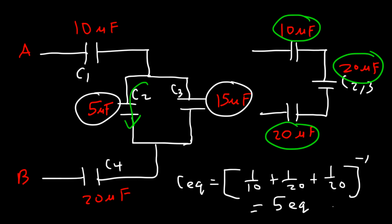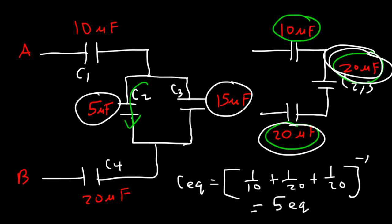To do it mentally: the two 20 μF capacitors in series give half of 20, which is 10. That 10 is in series with the other 10, and half of 10 is 5 — giving you the same answer of 5 microfarads.